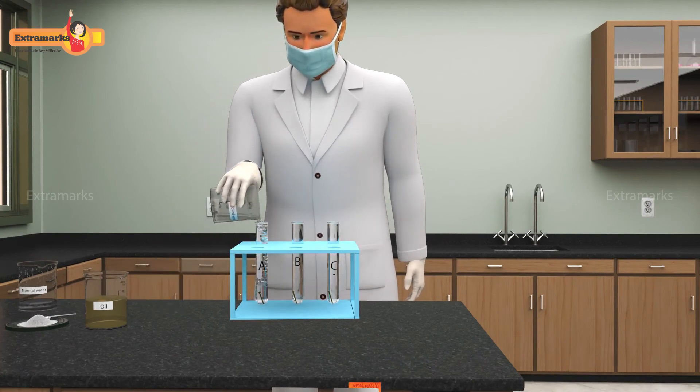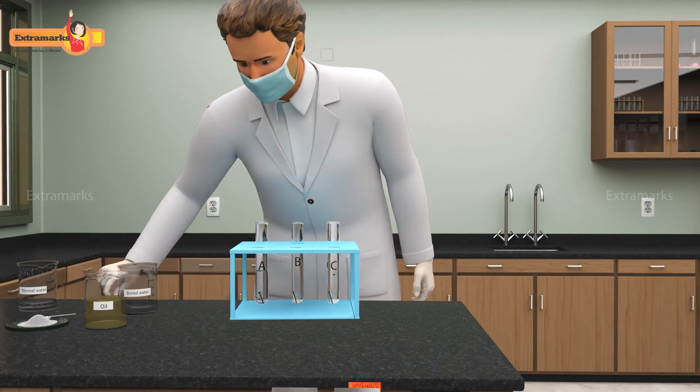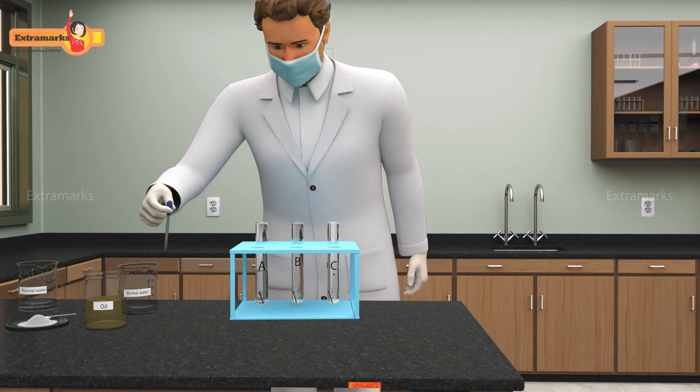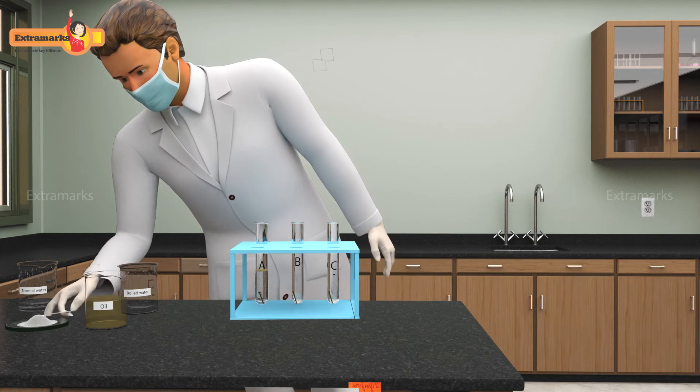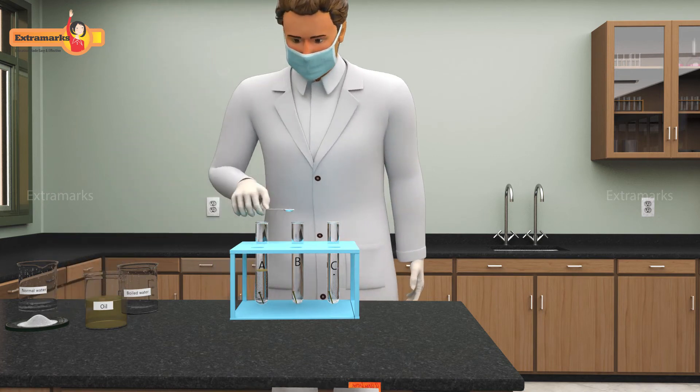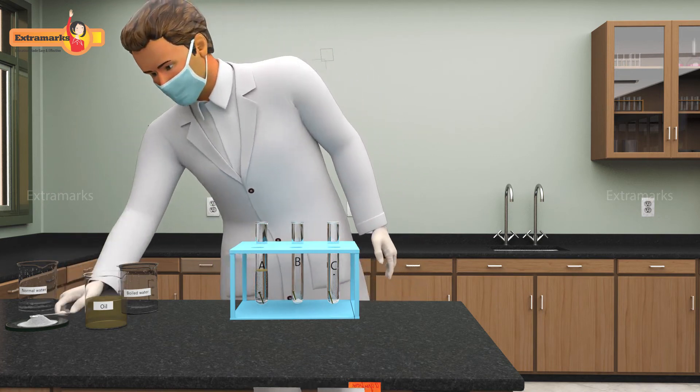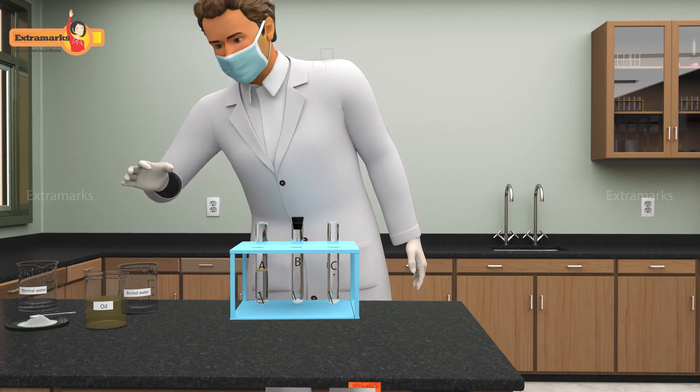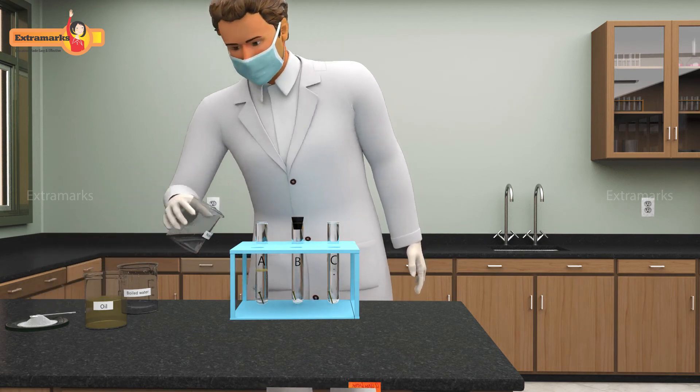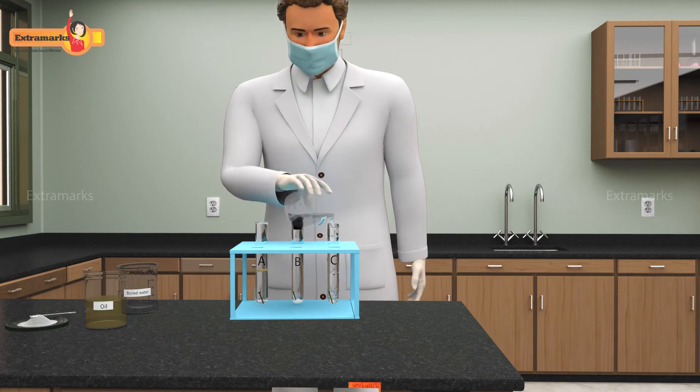In test tube A, add boiled water and then pour a little oil into it. In test tube B, add anhydrous calcium chloride and close its mouth with a rubber cork. In test tube C, add normal water.